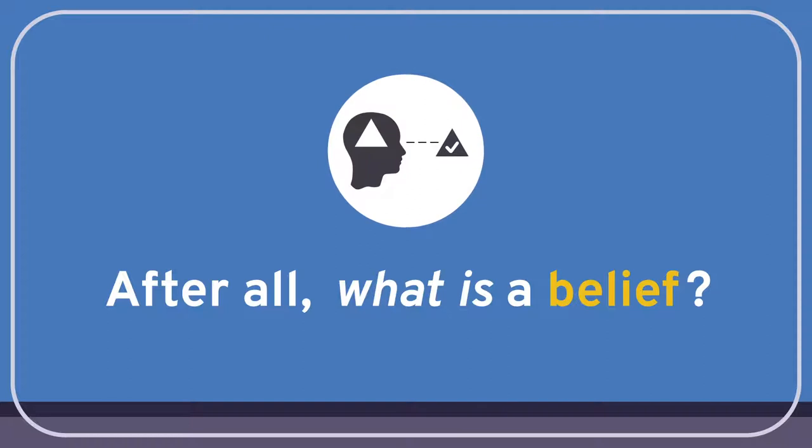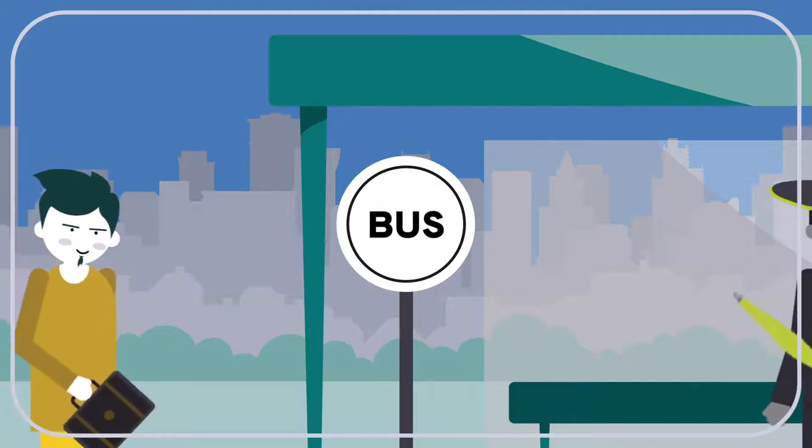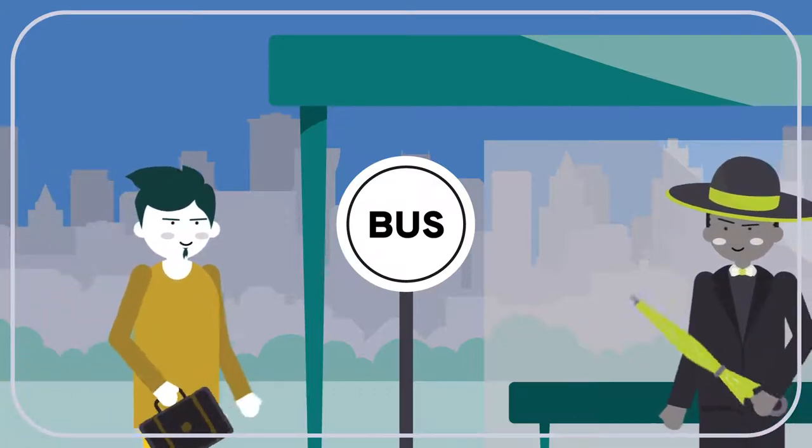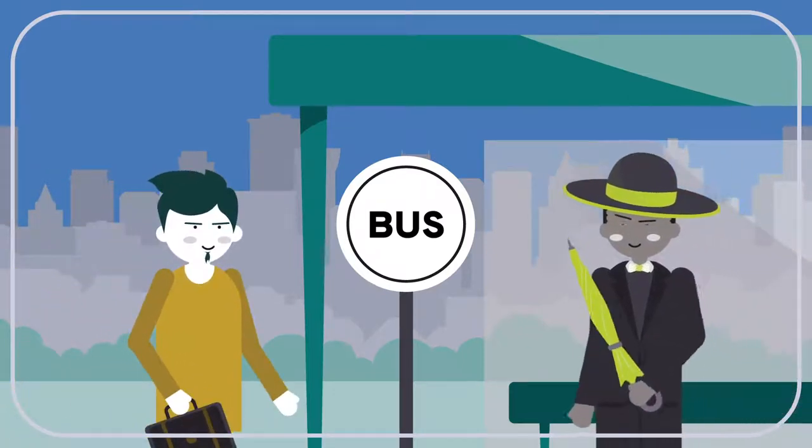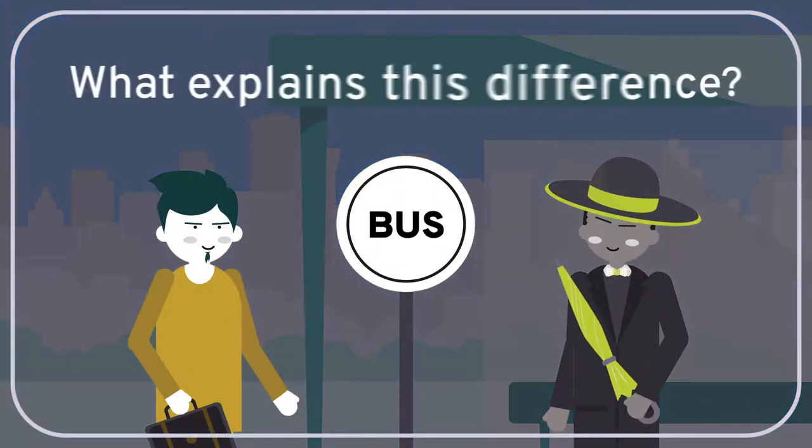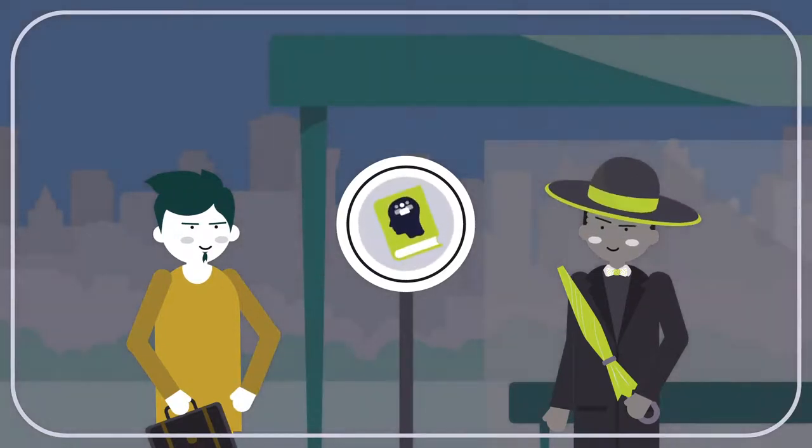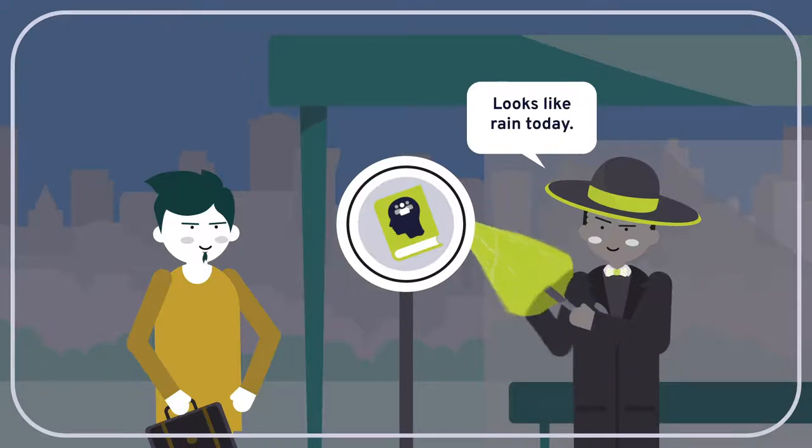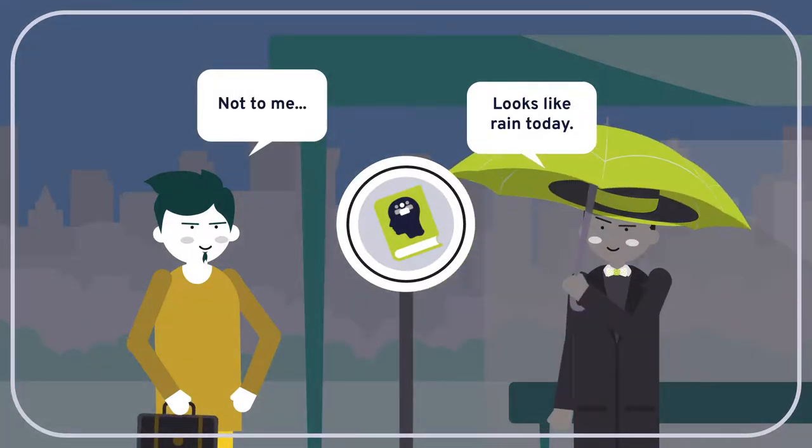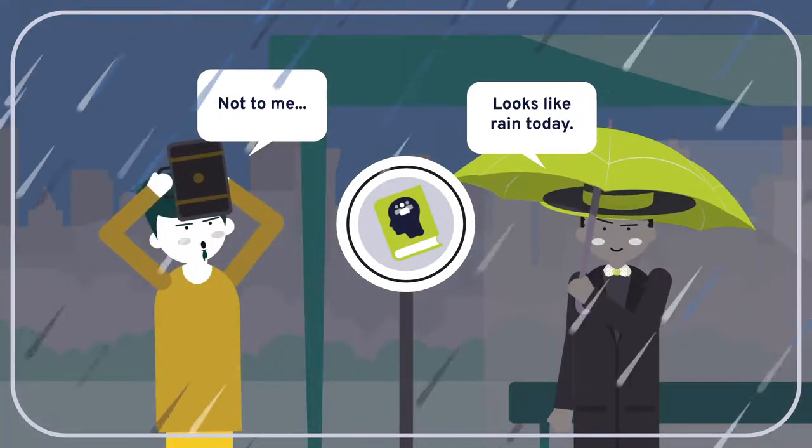Consider two people leaving for work. Each has to walk to the bus stop. Neither wants to get wet. One brings an umbrella while the other doesn't. What explains this difference? Folk psychology suggests several answers. The simplest is: one of them believes it might rain while the other one doesn't. This explanation also enables us to make accurate predictions. For example, which one will be surprised if it rains?